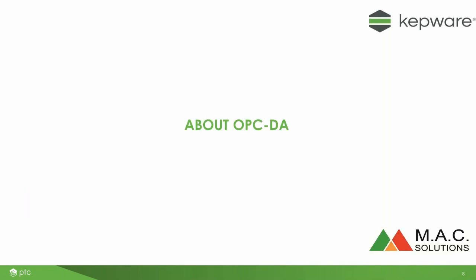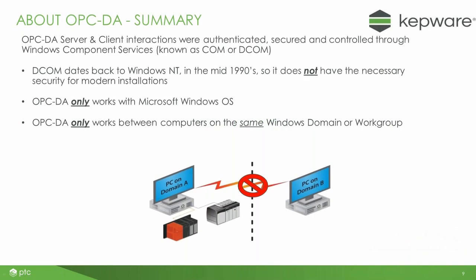A little bit about OPC DA. OPC DA was the original OPC specification from 1995. The way that OPC DA works is using the authentication that was embedded in the Windows operating systems at the time — Windows NT. The authentication between nodes on an NT network was the method used to secure interactions between an OPC server on one PC and the OPC client on another PC. This is based around a Windows system called DCOM, which is very old and would not be considered anything like as secure as a modern approach, which is OPC UA.